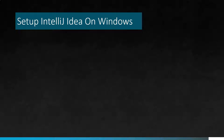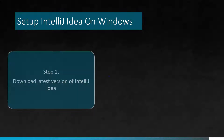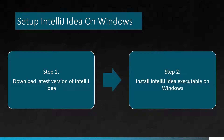We are going to see how we can set up the IDE called IntelliJ IDEA on our Windows machine. It's pretty simple — we just have to follow two steps. The first step is to download the latest version of IntelliJ IDEA. We'll be using the Community Edition, and once we download it we can install the setup on our Windows machine.